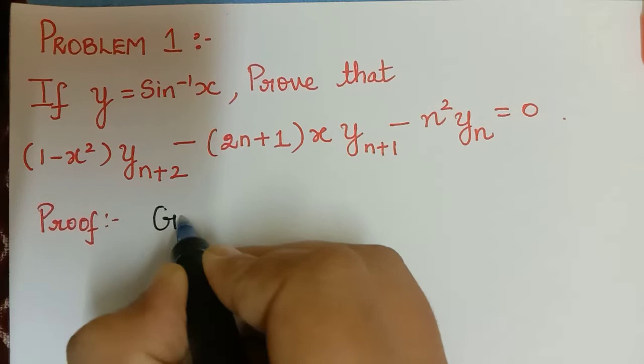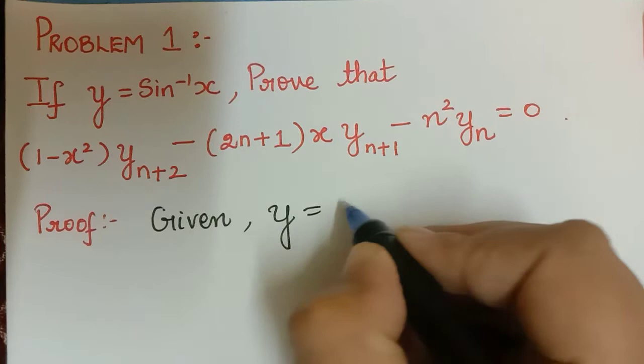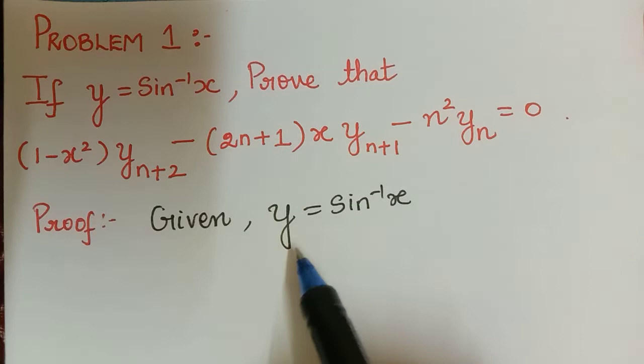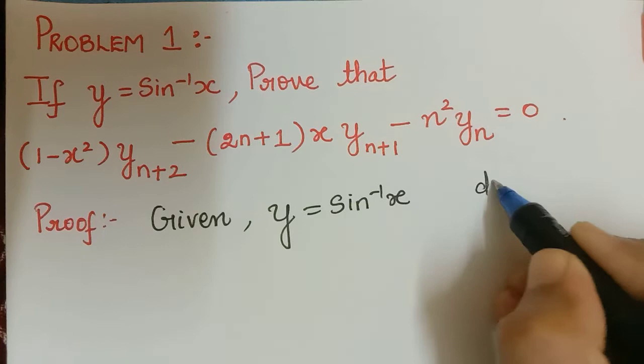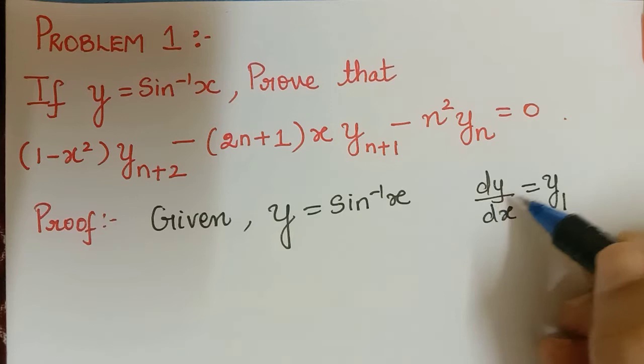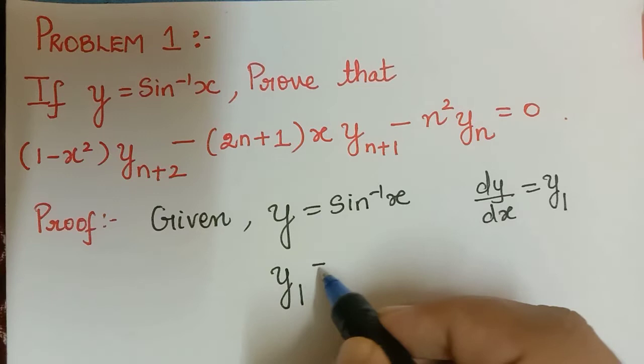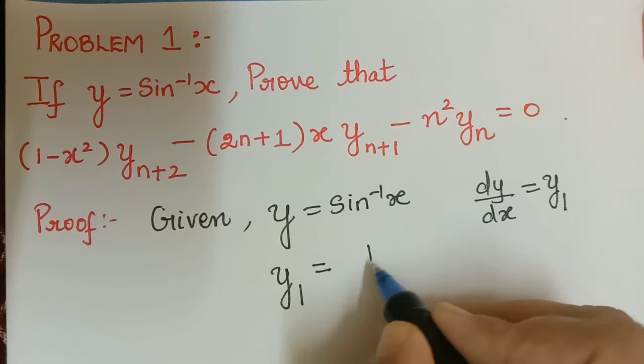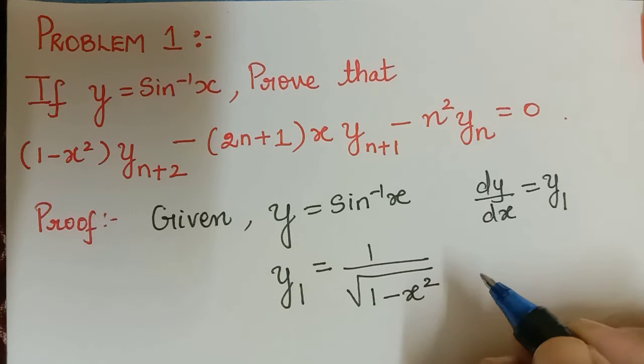So first we will write whatever is given. It is given that y is equal to sin inverse of x. Now we shall differentiate this for the first time — that is we are going to find dy/dx, represented as y₁. So y₁ will be equal to 1 by square root of 1 minus x squared.